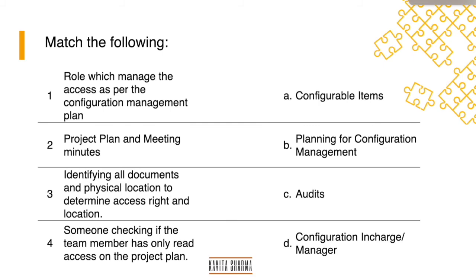Let's do a match, mix and match to understand whether you got it right or not. So the left hand side is the activity which is done, right hand side is the description. So find out what is what. Role which manages the access as per the configuration management plan, what is that?